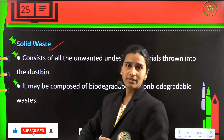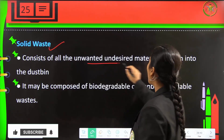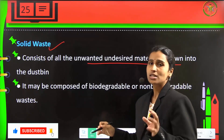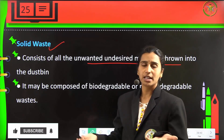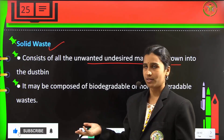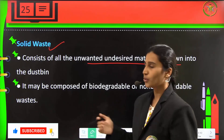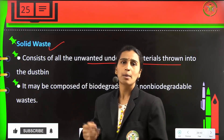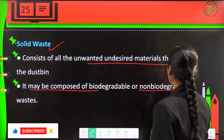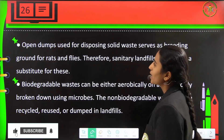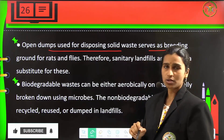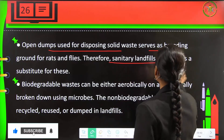Next is solid waste. The waste we create consists of all the unwanted, undesirable materials which are thrown into our dustbins. Instructions have been given repeatedly to separate dry waste and wet waste, but we fail to do that, which causes pollution in our environment. It may be composed of biodegradable and non-biodegradable waste. Open dumps used for disposing solid waste serve as breeding grounds for rats and flies.